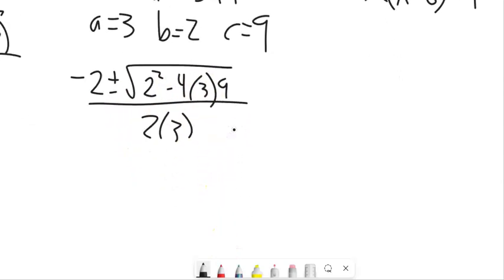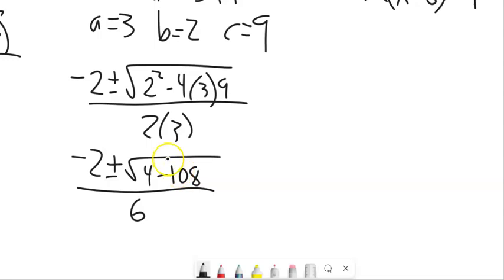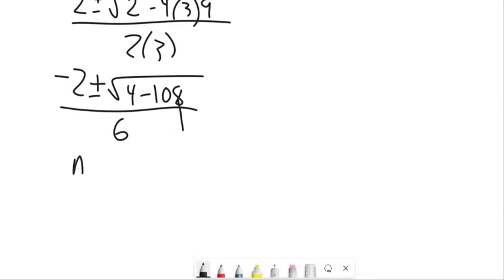You do plus or minus 2 squared is 4. But notice here we have 4 times 3 times 9. 12 times 9. What's that? 4 minus 108 over 6. And this is going to end up being a negative number. So it's asking us to take the square root of a negative. Not going to happen. So we can say right here, no real solution. Our answer is there is no answer.